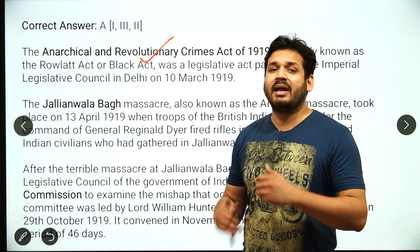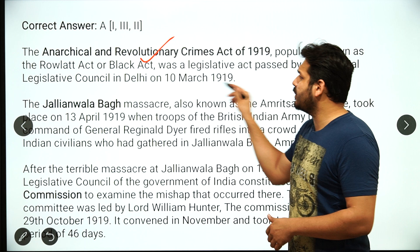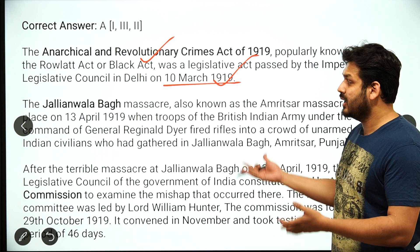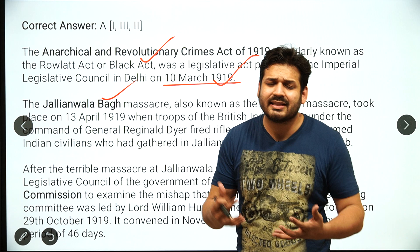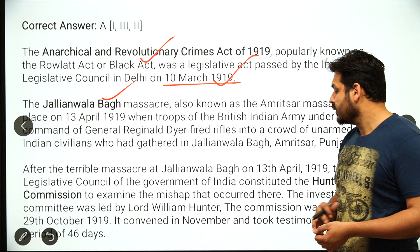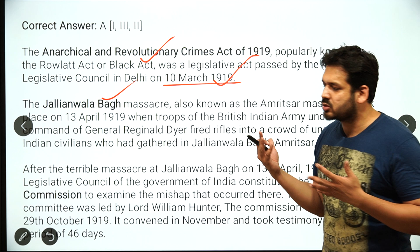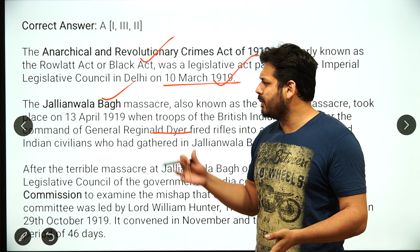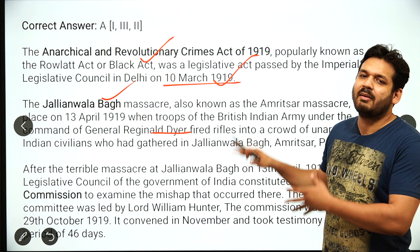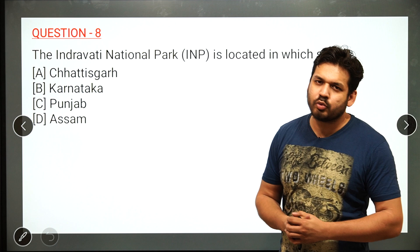The Rowlatt Act is also called the Black Act because a person could be arrested merely on suspicion without any hearing. It came around 10th March 1919 and caused massive protests, leading to the Jallianwala Bagh incident on 13th April 1919. The British government then established the Hunter Commission to investigate the incident. However, the commission actually praised General Dyer for his role in the massacre.